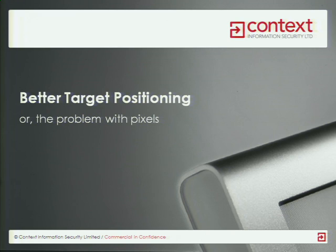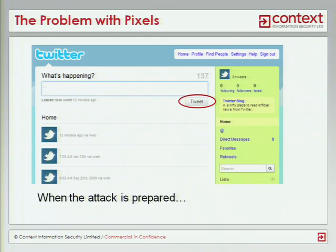One of the problems with clickjacking — one of the things that makes it fairly tricky to carry out — is that we need to know the exact position on the page of the target. Remembering the Twitter example from earlier, in order to target a button and do the positioning, we need to know the exact number of pixels from the left and from the top.